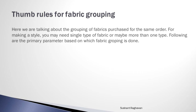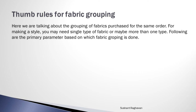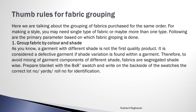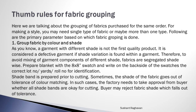Thumb rules for fabric grouping. Here we are talking about the grouping of fabrics purchased for the same order. For making a style, you may need a single type of fabric or maybe more than one type. The primary parameters for fabric grouping are as follows. Group fabric by color and shade. A garment with different shades is not a first quality product — it is considered defective if shade variation is found within a garment. Therefore, to avoid mixing of garment components of different shades, fabrics are segregated shade-wise. Prepare a blanket with 8x8 inch swatches and write on the back side the correct lot number, yards, and roll number for identification. A shade band is prepared prior to cutting.